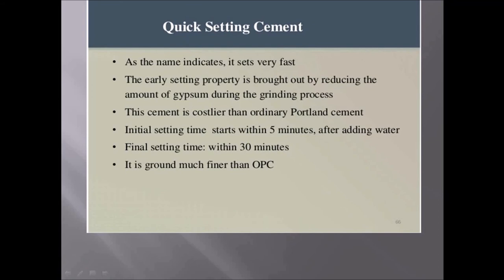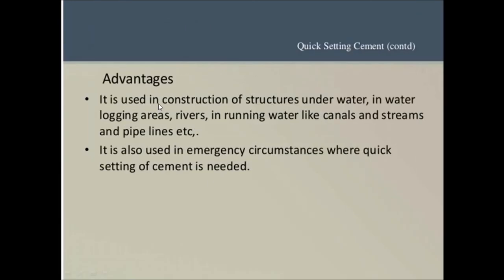Quick setting cement, as the name indicates, sets very fast. The early setting property is achieved by reducing the amount of gypsum during the grinding process. This cement is costlier than ordinary Portland cement. The initial setting time is 5 minutes and the final setting time is 30 minutes. It is ground finer than OPC. The advantage of quick setting cement is that it is used in construction of underwater structures, in water-logged areas, and in emergency circumstances where quick setting of cement is needed.